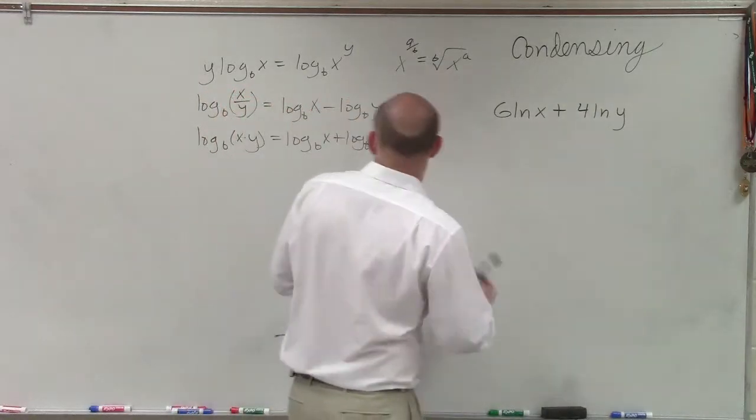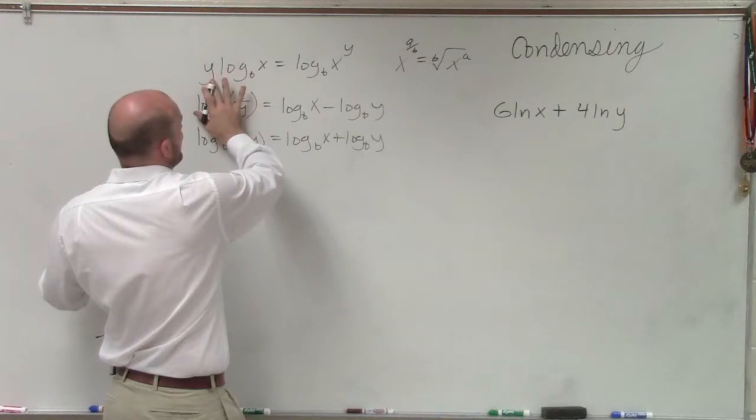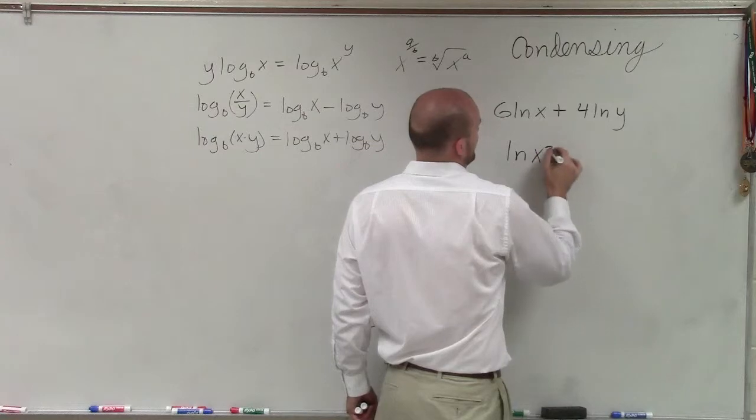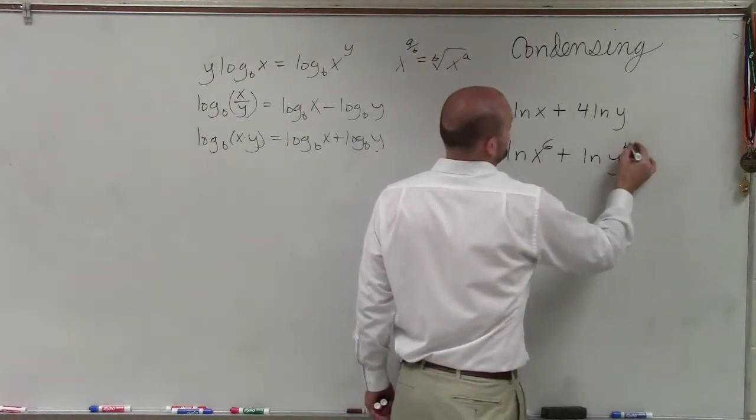So to do that, the first property we're going to apply is our power property, which if we're multiplying a number by a logarithm, we can raise that as our power. So therefore, I'm going to rewrite this as ln of x to the 6 plus ln y to the 4th.